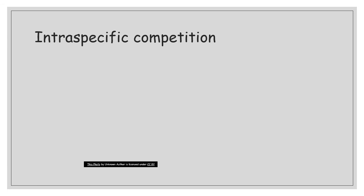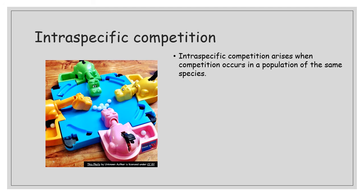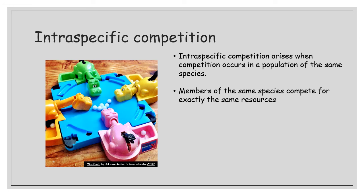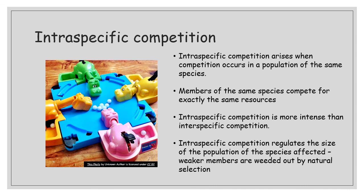Intraspecific competition is different and more intense — it happens between organisms of the same species, like the hungry hippos example competing for the same marbles. They have the same resource needs, so the competition is more intense. This regulates the size of the population and supports the idea of survival of the fittest, because weaker or less able members are weeded out by natural selection. For example, giraffes with shorter necks can't reach as much food, so they die out, strengthening the overall population.